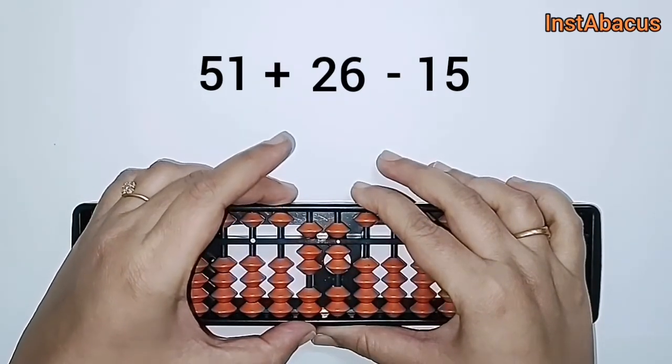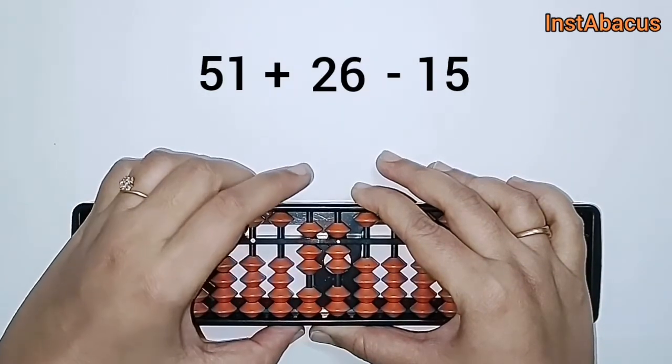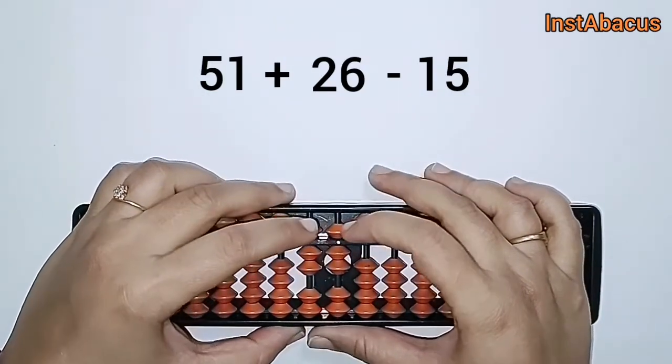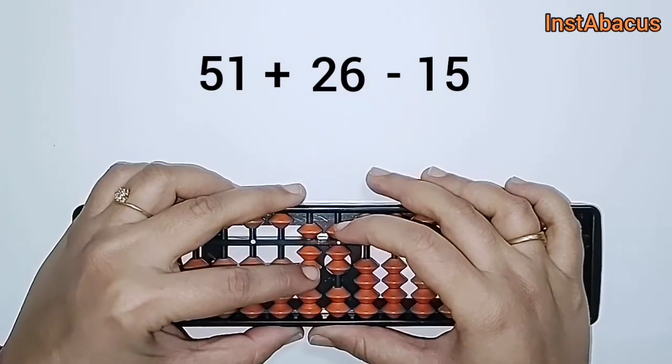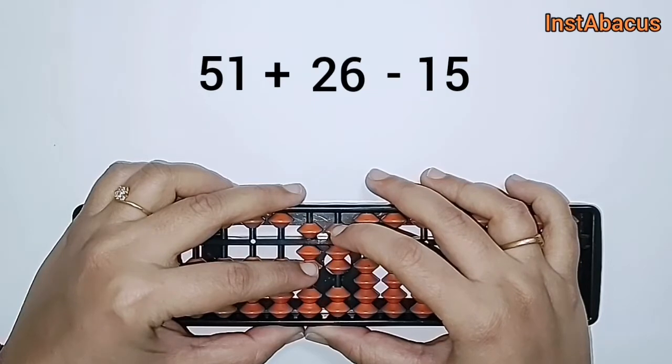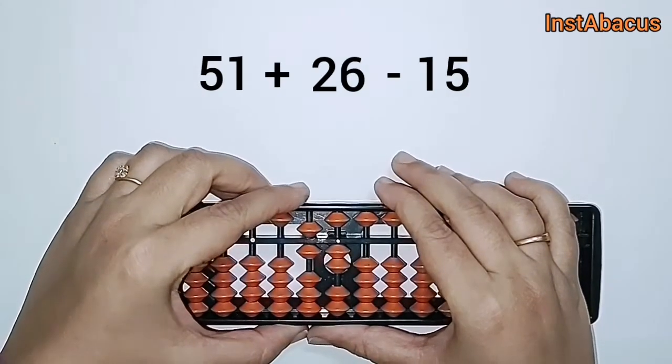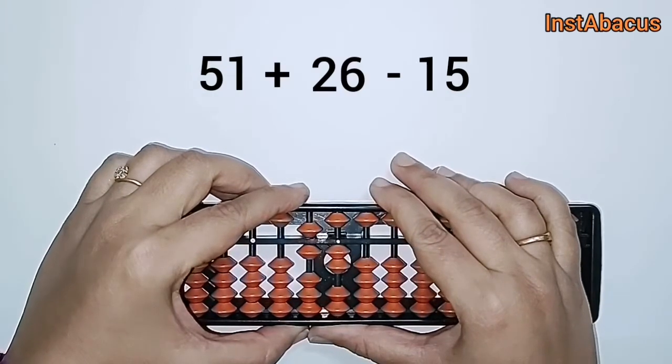There we go. Now let's subtract 15. For that, we are going to move one earthly bead here in the tens column and this one heavenly bead here in the units column away from the answering bar. There we go, so we have subtracted 15.